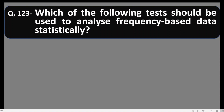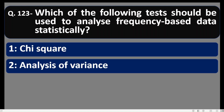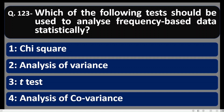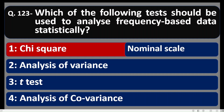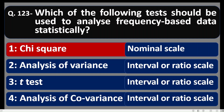Question number 123: Which of the following tests should be used to analyze frequency-based data statistically? Options: 1) chi-square, 2) analysis of variance, 3) t-test, 4) analysis of covariance. Since frequency data is in nominal scale, analysis of variance, t-test, and analysis of covariance cannot be used — they require interval or ratio scale. The correct option is chi-square.